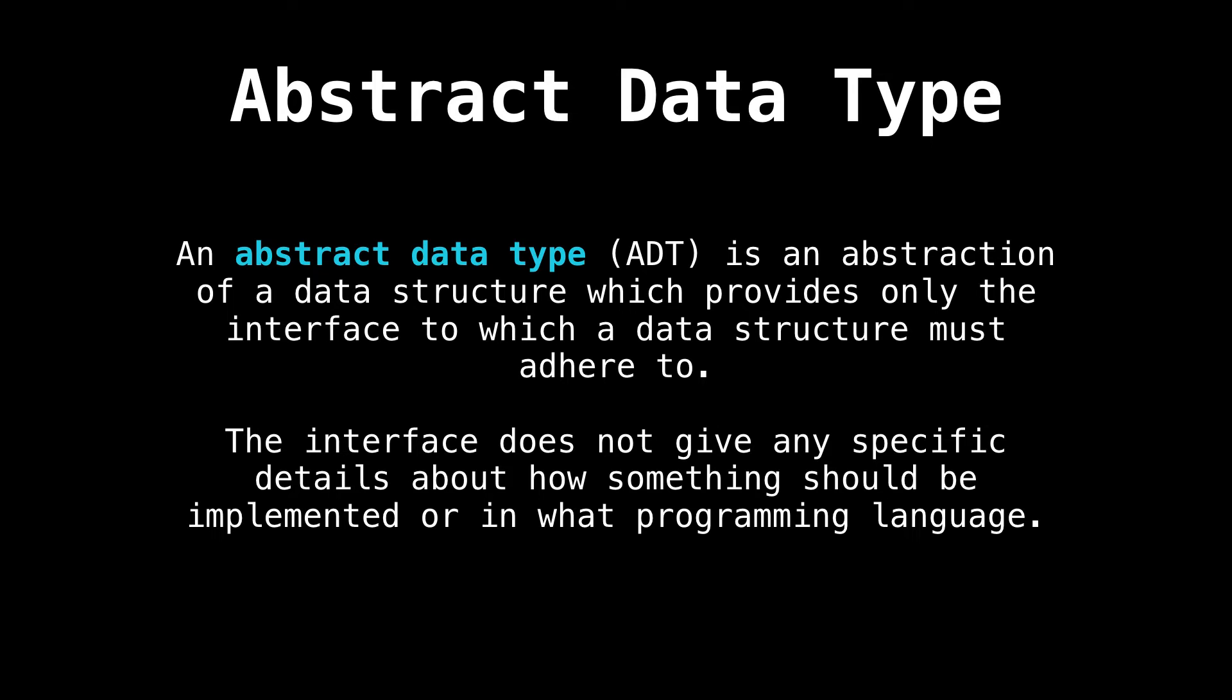Well, the answer is that an abstract data type is an abstraction of a data structure which provides only the interface to which that data structure must adhere to. The interface does not give any specific details on how a specific data structure should be implemented or in what programming language.